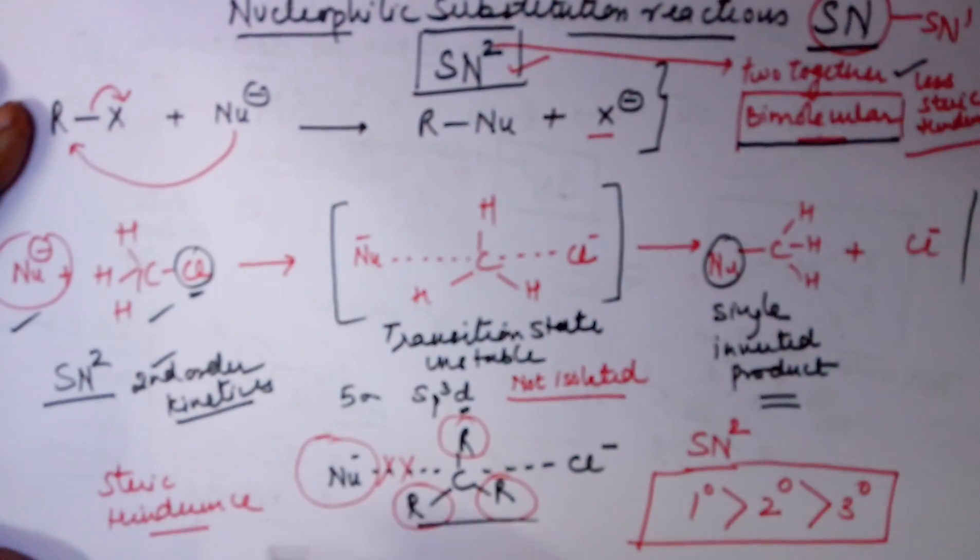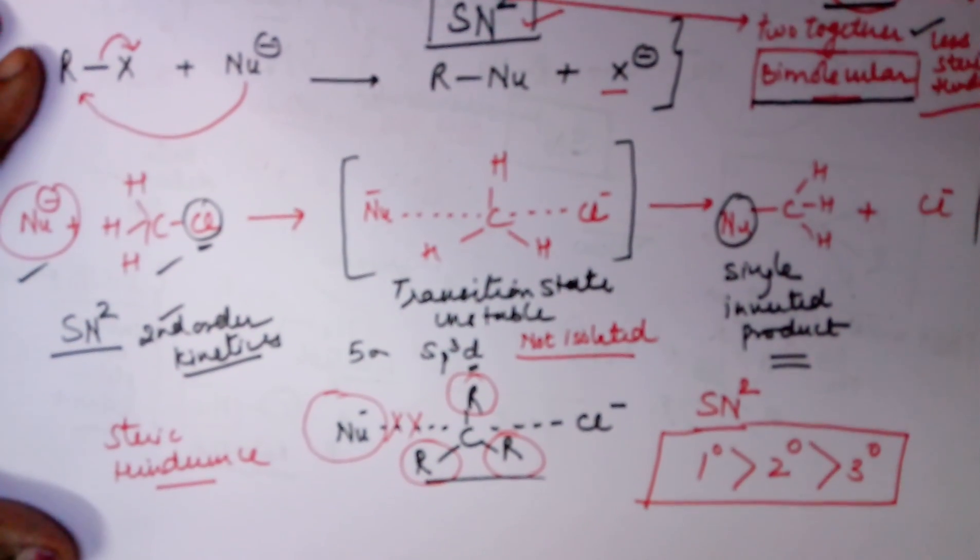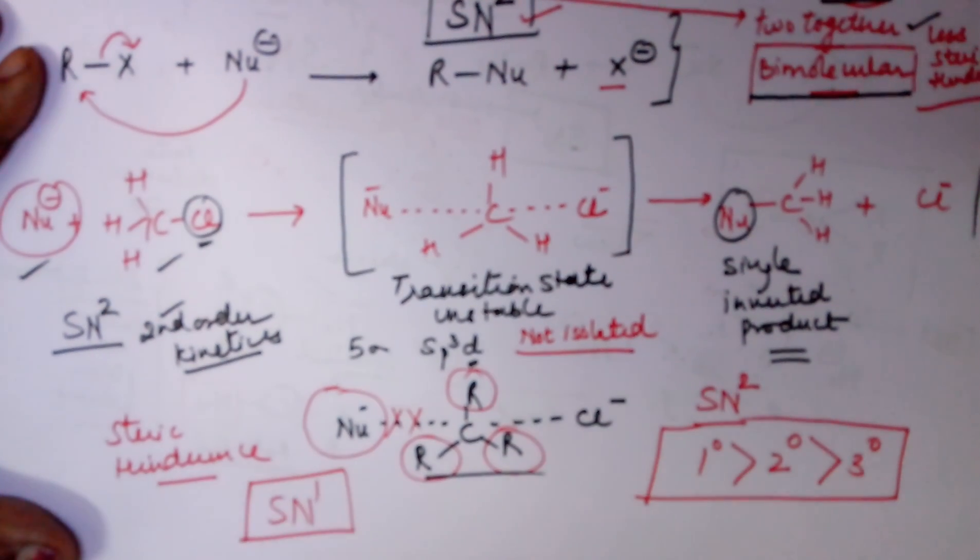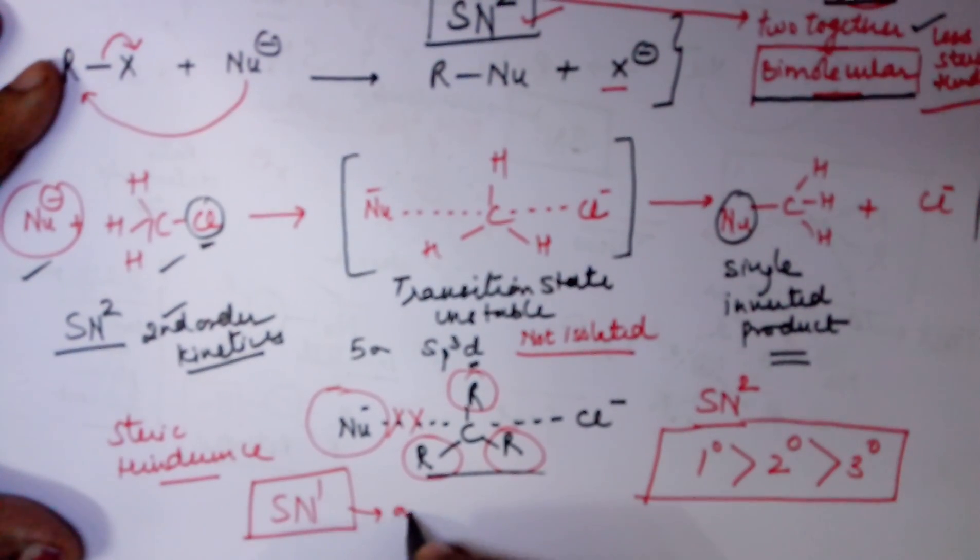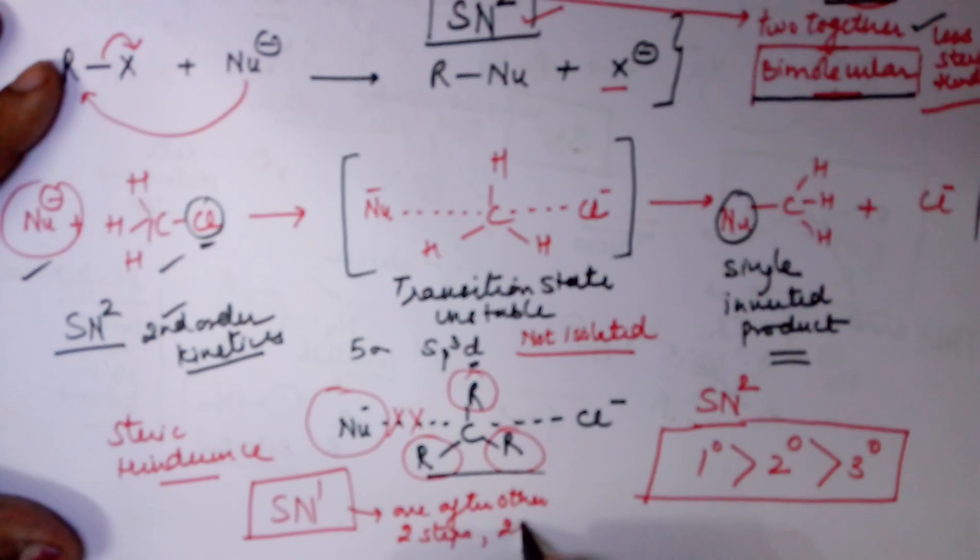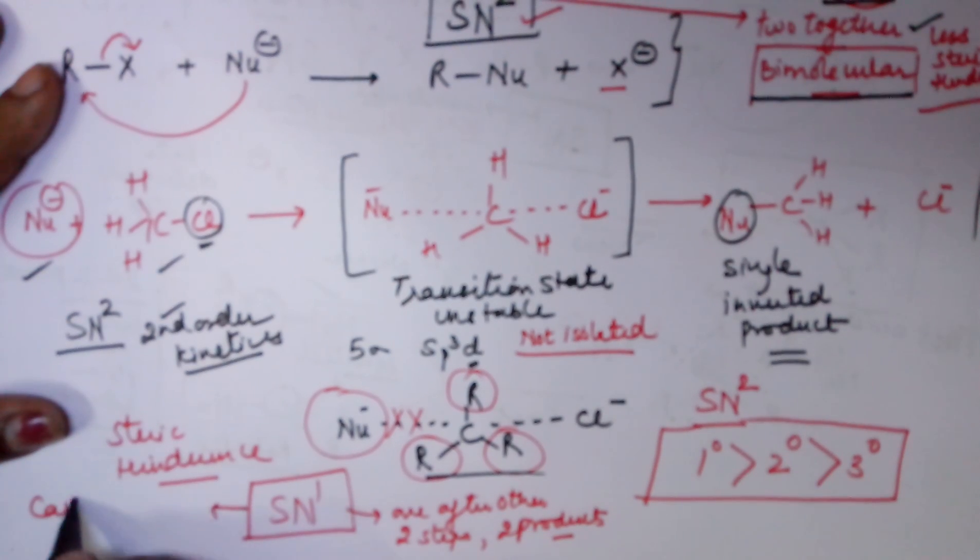Whereas, had it been an SN1 reaction, in case of an SN1 reaction, you know that for an SN1 reaction, it is one after the other, therefore you have two steps, you have two products, and you have formation of a carbocation.